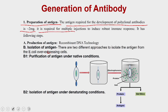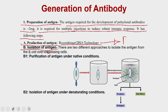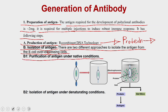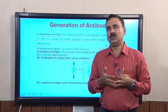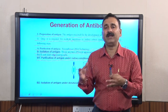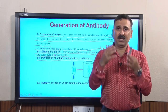Antigen is required for multiple injections to induce a robust immune response. Antigen preparation has the following steps: first, you produce the antigen using either recombinant DNA technology or conventional chromatography techniques. Then you do isolation of the antigen. From E. coli overexpressing cells, you can use purification of antigen under native conditions — overexpress the protein in E. coli and use ion exchange, hydrophobic, or gel filtration chromatography — giving you large quantities of purified protein under native conditions.